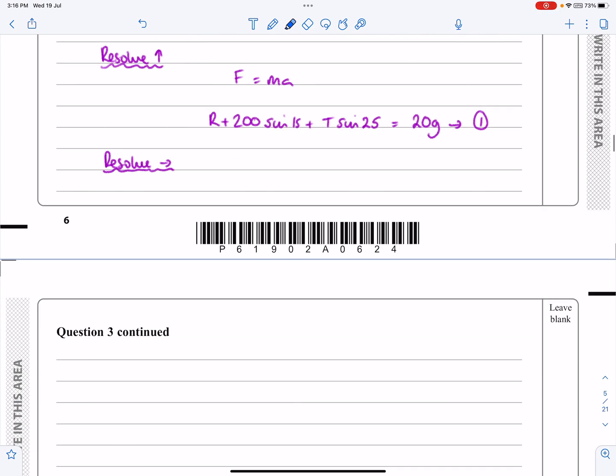So resolving horizontally then I'm going to get let's just say F equals ma again but A is equal to zero. 200 cos 15 minus the T cos 25 and this is the key minus the F.